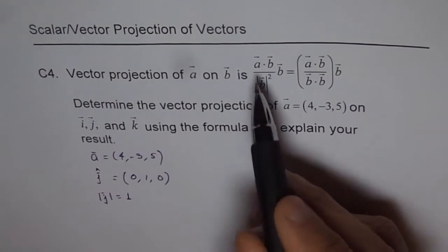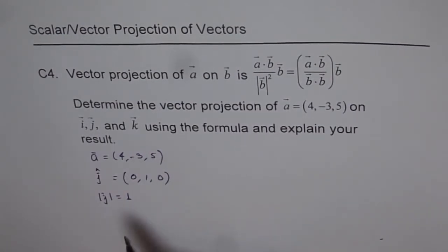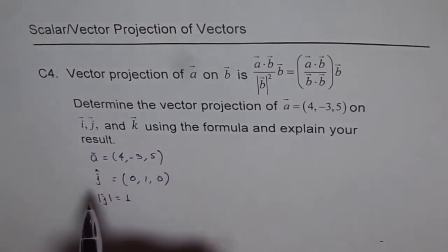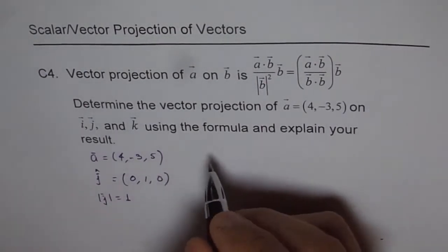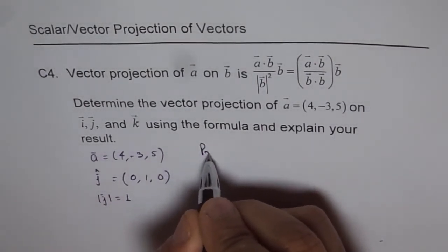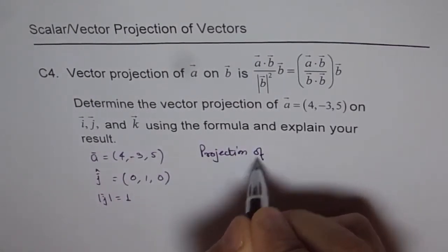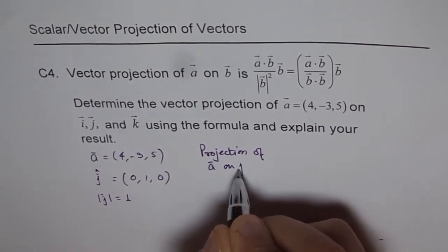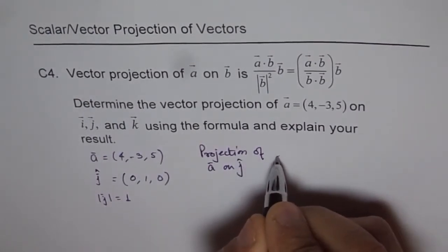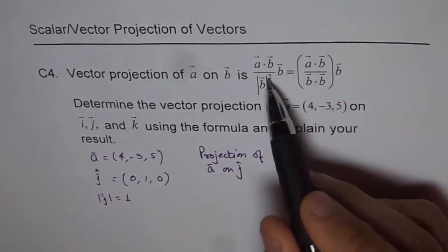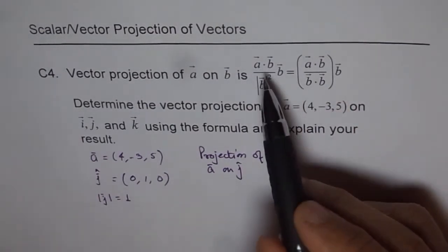Now, I can use this formula and get the result. So, my projection of A on B, which is j in this case - projection of A on vector j. I could use any of those formulas, they're good enough. But let me use the first one.